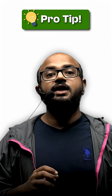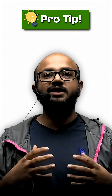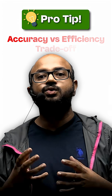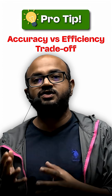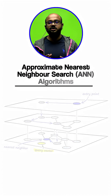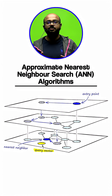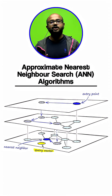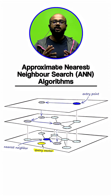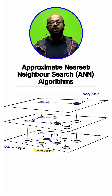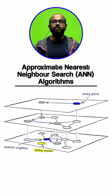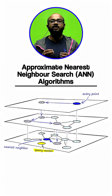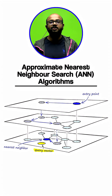Pro tip: elevate your answer by discussing the crucial accuracy versus efficiency trade-off. Many vector databases use approximate nearest neighbor search for speed. Explain how you would analyze this trade-off using curves like recall versus QPS, showing you understand real-world implementation choices.